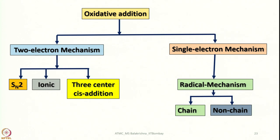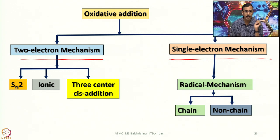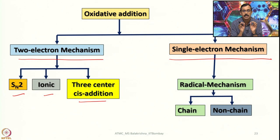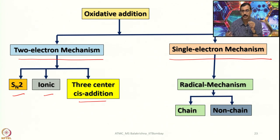Now let us understand the different mechanisms through which one can perform oxidative addition reactions. Oxidative addition mechanisms can be broadly split into two categories: two-electron mechanisms and single-electron mechanisms. Within the two-electron mechanism there are three types: SN2, ionic, and three-centred cis addition. Within single-electron mechanism we have radical mechanisms, which can be further split into chain and non-chain mechanisms.